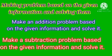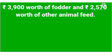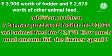Now, making problems based on given information and solving them. We need to make an addition problem based on the given information and solve it, and also make a subtraction problem based on the given information and solve it. Addition problem: A farmer purchased fodder for Rs. 3,900 and animal feed for Rs. 2,570. How much total amount did the farmer spend?